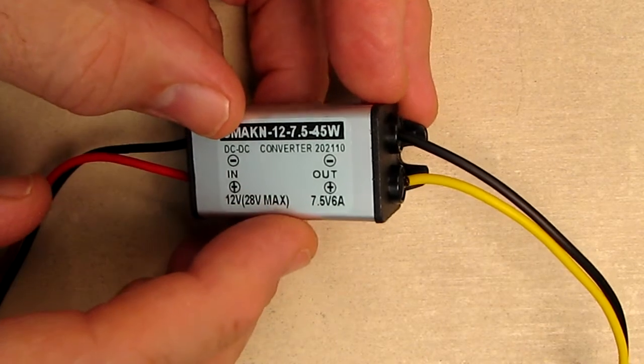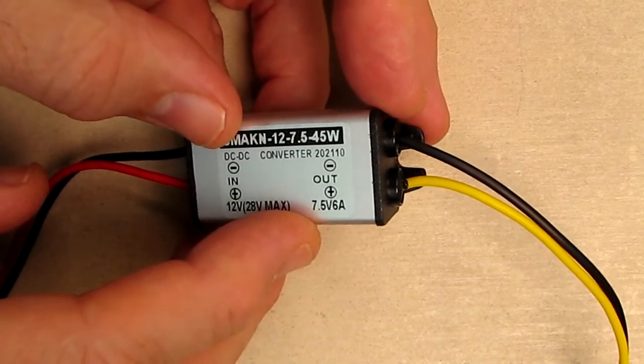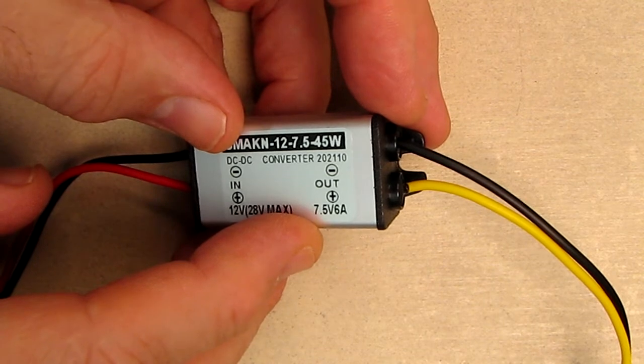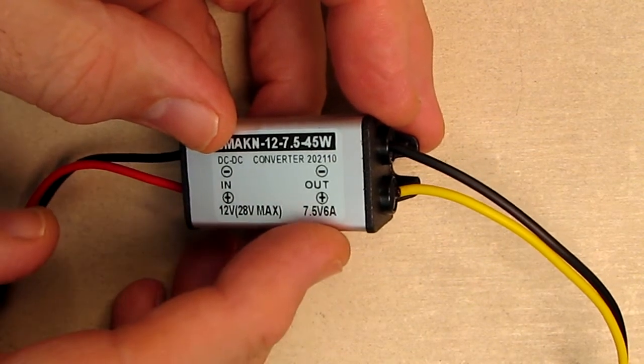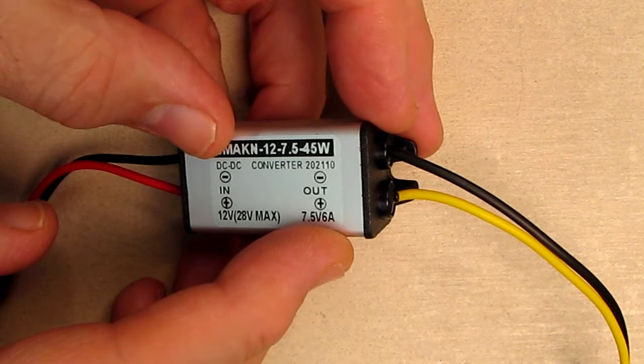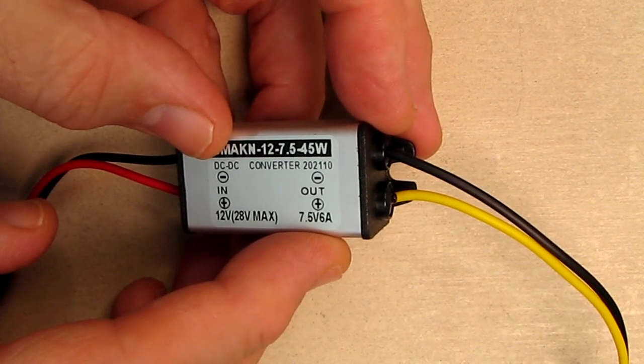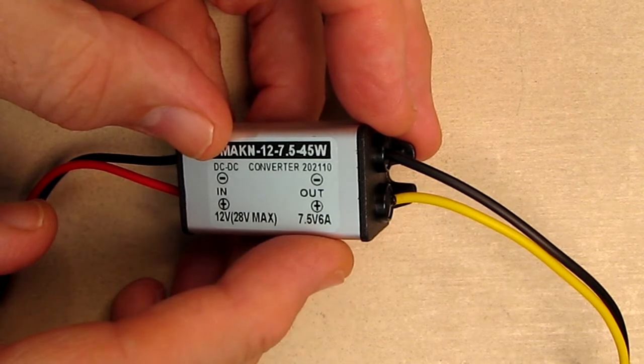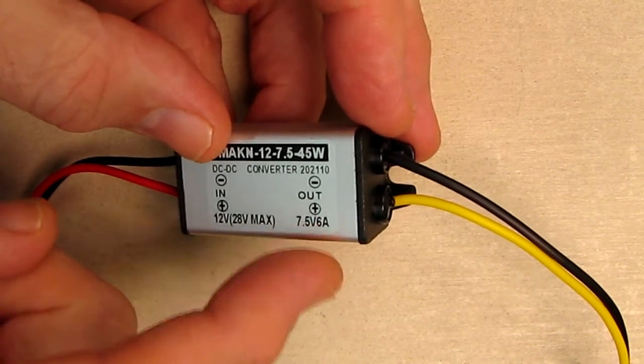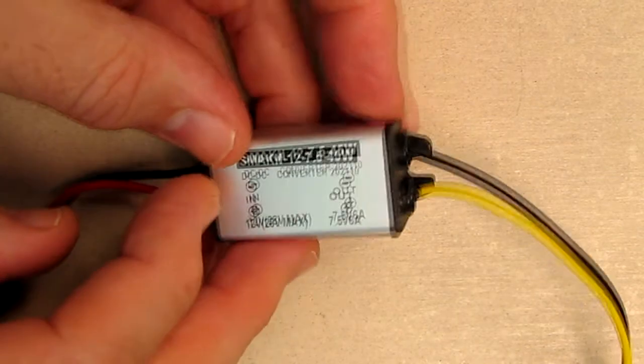What these are really great for is converting 12 volts from your car to a lower voltage for whatever uses that lower voltage. A lot of people use this for cameras, and 7.5 to 7.6 volts is a really common voltage for a lot of cameras.